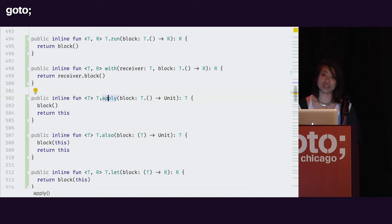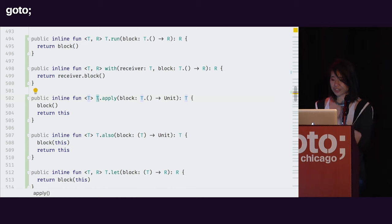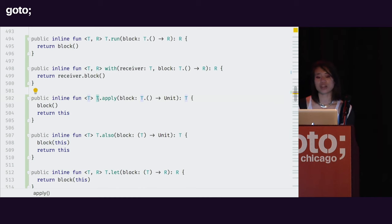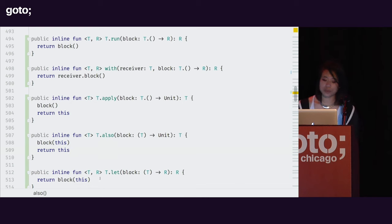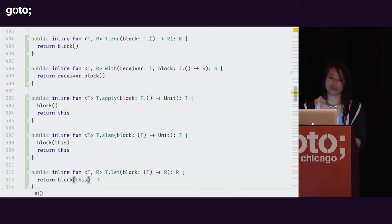The second question I ask myself is: does this function return the receiver or a new value? The receiver is 'this'. When you have an extension function like this, the instance it gets called on is the 'this' inside of the function — it's the receiver. Some of these functions, like apply and also, return 'this', as opposed to say let or run, where it's actually taking some function I pass in, evaluating it, and returning the result of that evaluation.